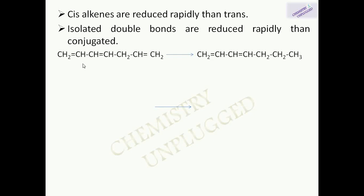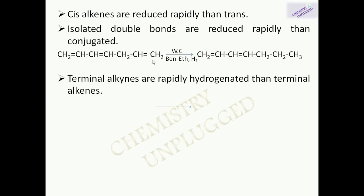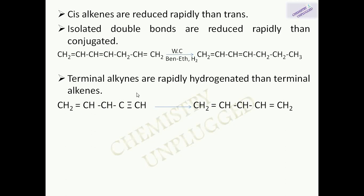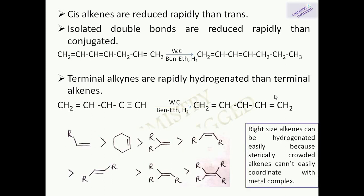Isolated double bonds are reduced more rapidly than conjugated double bonds. For example, in this molecule we have two types of double bonds — two double bonds are in conjugation, but one double bond is isolated — so Wilkinson's catalyst will reduce only the isolated double bond. Next, terminal alkynes are more rapidly hydrogenated than terminal alkenes. In a molecule with both a terminal alkene and a terminal alkyne, the terminal alkyne will be reduced preferentially.